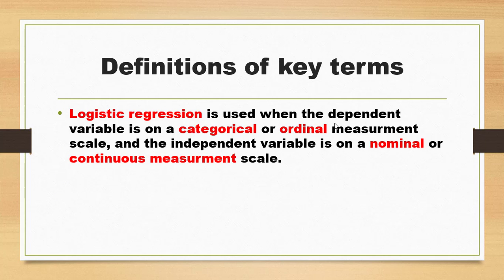Logistic regression is used when the dependent variable is a categorical or ordinal measurement scale. Categorical variables consist of categories like gender — male, female, etc. Ordinal variables have values that can be ranked, like a Likert scale or ranking items. The independent variable should be on a nominal or continuous scale — this is the second assumption.